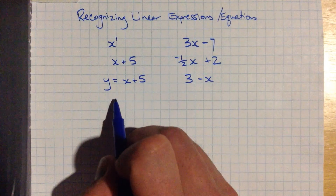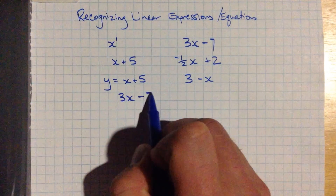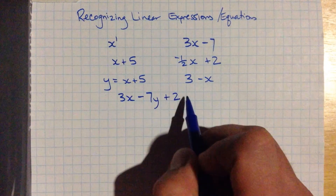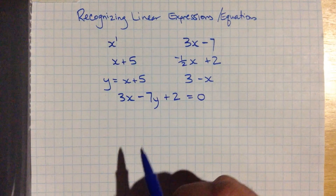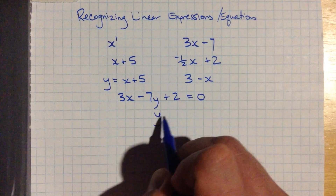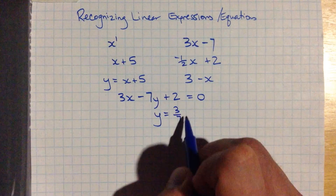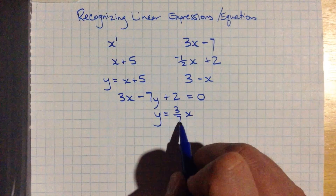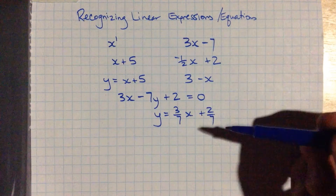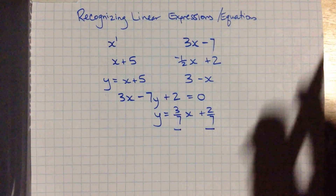Maybe we'll try something with the y in it again. This one's called standard form: 3x minus 7y plus 2, that's linear. Equals 0 turns that into an equation, a linear equation. We could rearrange the pieces of this formula to get y equals 3-sevenths x, or 3-sevenths times x plus 2-sevenths. Those are all linear, and this last one here is in the slope y-intercept form that you might be used to.